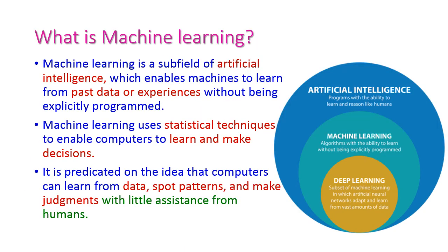What is machine learning? Machine learning is a subfield of artificial intelligence. In this diagram you can see that artificial intelligence is a very big domain — it tries to create a machine that will do or think like a human, a program with the ability to learn and reason like a human. Machine learning is a subfield of artificial intelligence.